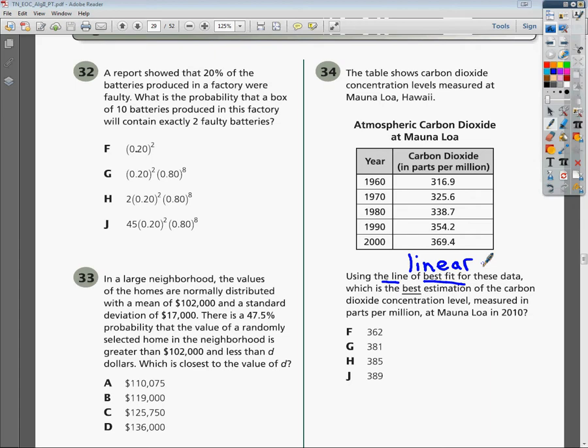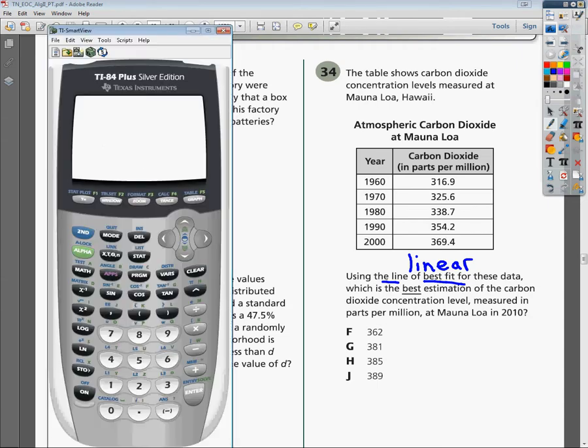Which is the best estimation of the carbon dioxide concentration measured in parts per million in 2010? So all I'm going to do is take the information and punch it into a table. Not the one you're sitting in front of, probably, but in the calculator. So I'm going to make a list very quickly.